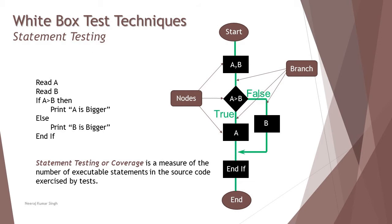Covering all the nodes with minimum number of paths is called statement testing or minimum test cases required for 100% statement coverage, whereas covering the arrows is called branch coverage or decision coverage.